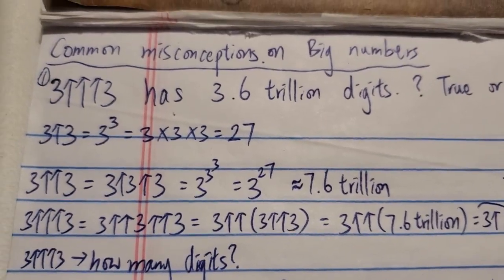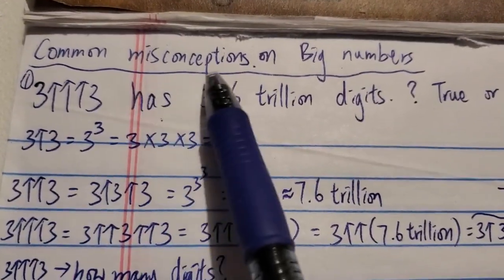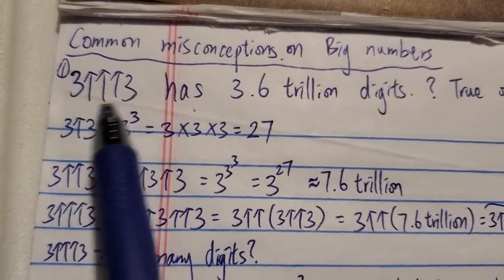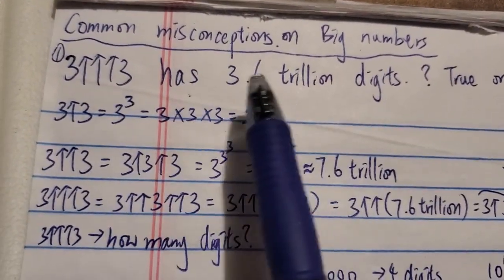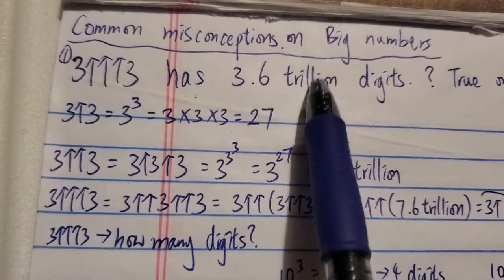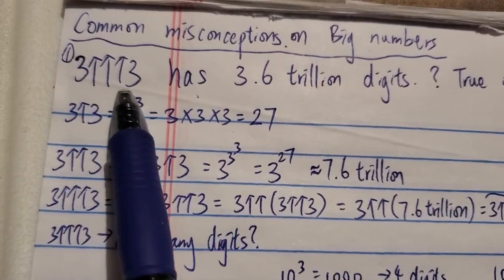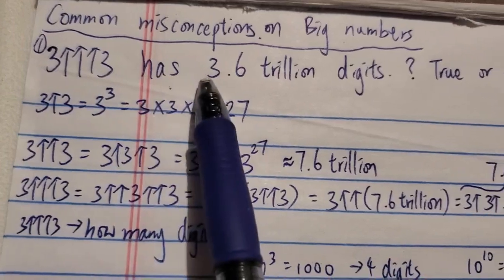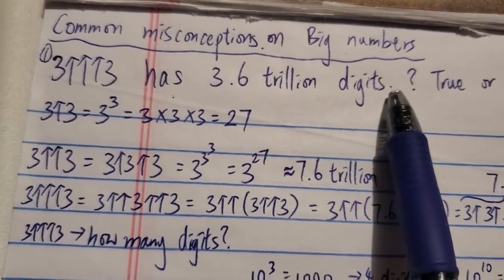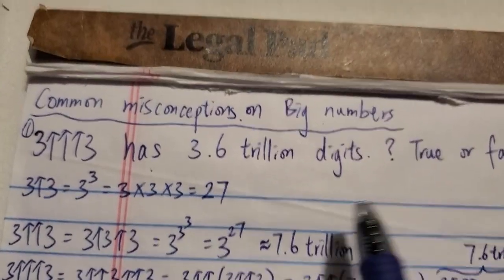Hi everyone. Today I want to talk about common misconceptions on big numbers. The first one is the most common one — I get this comment a lot, people saying I make a mistake in my videos by saying 3↑↑↑3 has 3.6 trillion digits. They keep saying that in the comments.